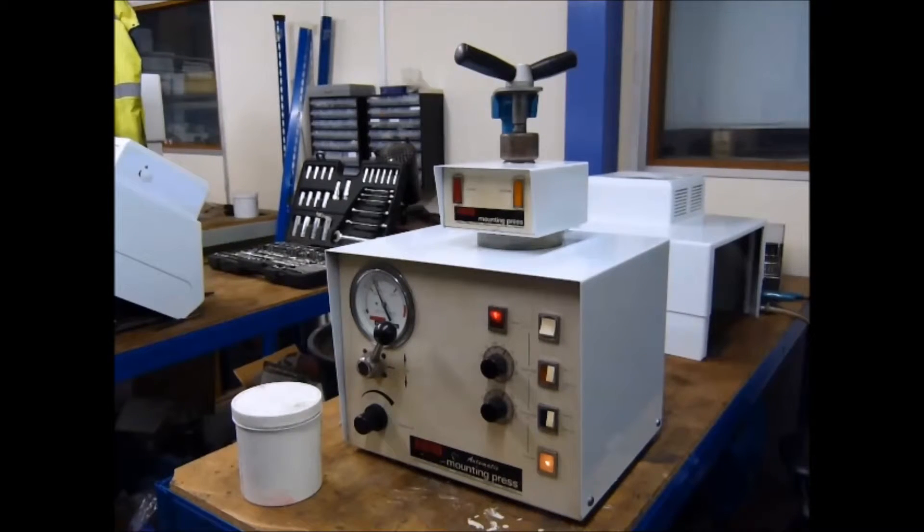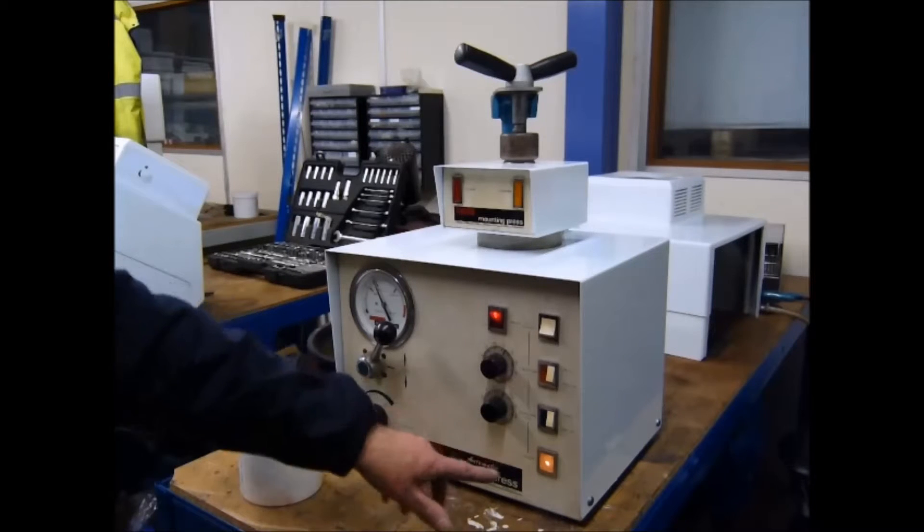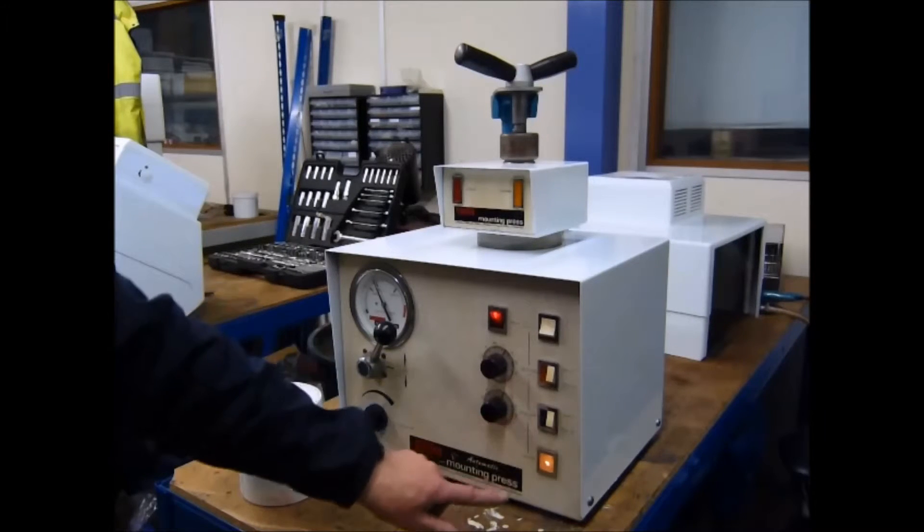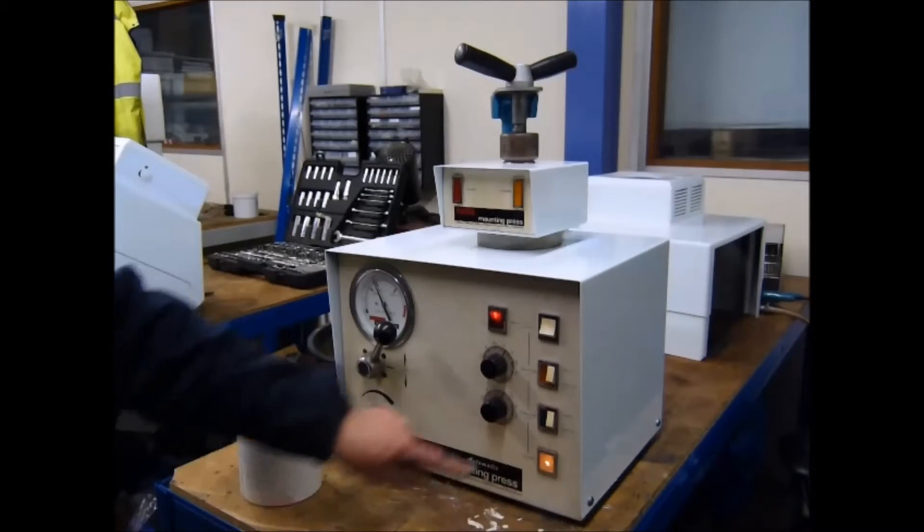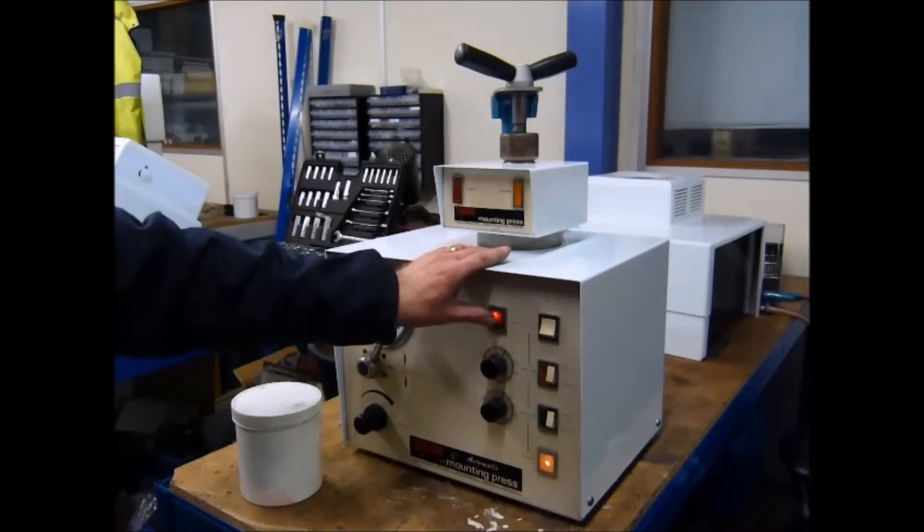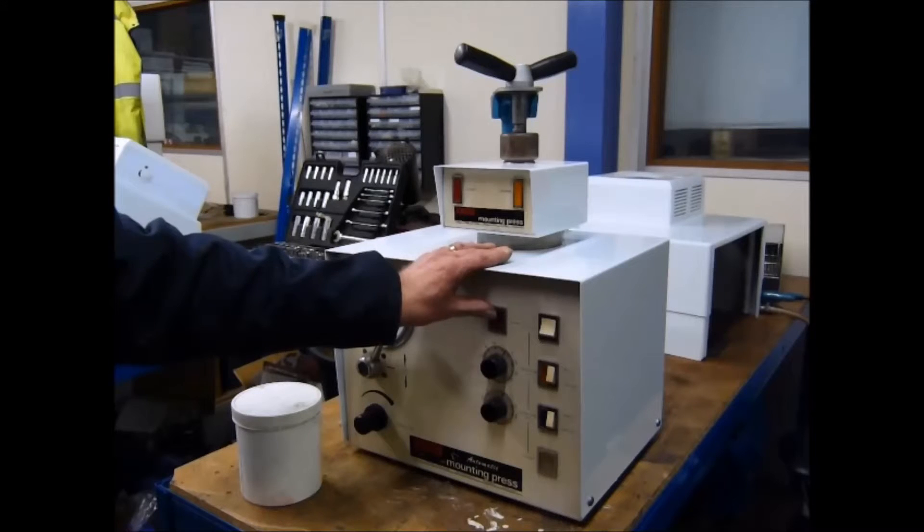As you can see now, the cycle is finished indicated by the fact that the cooling light has gone out and the finish cycle lights come on. The alarm is cancelled simply by switching it off.